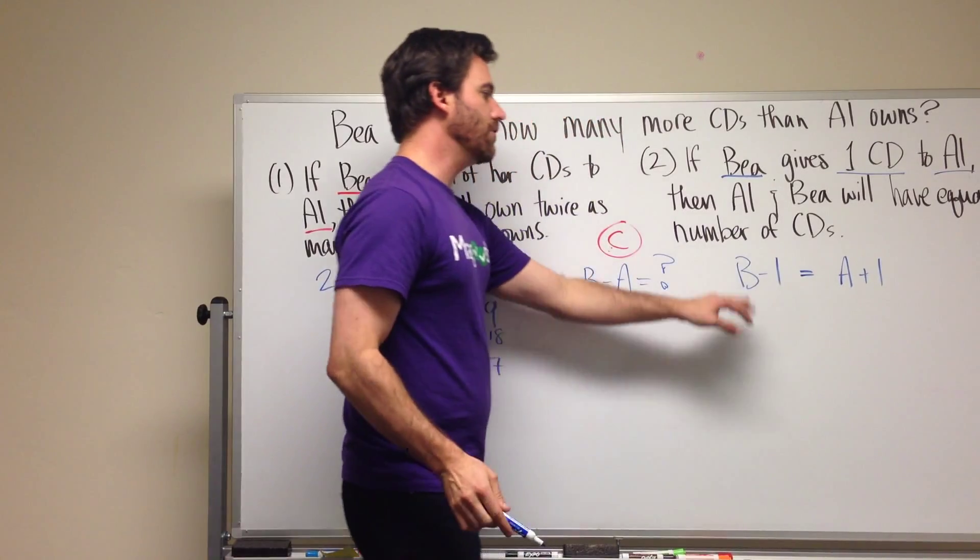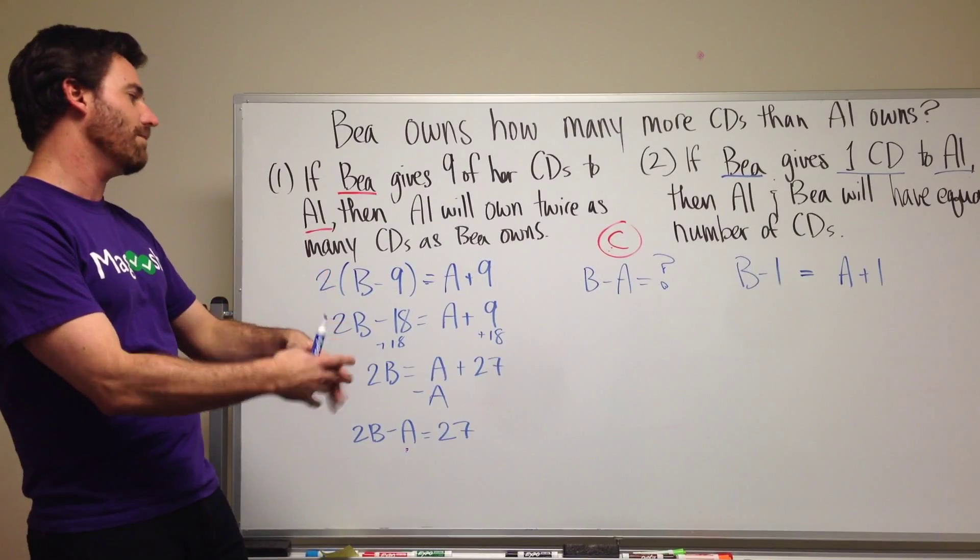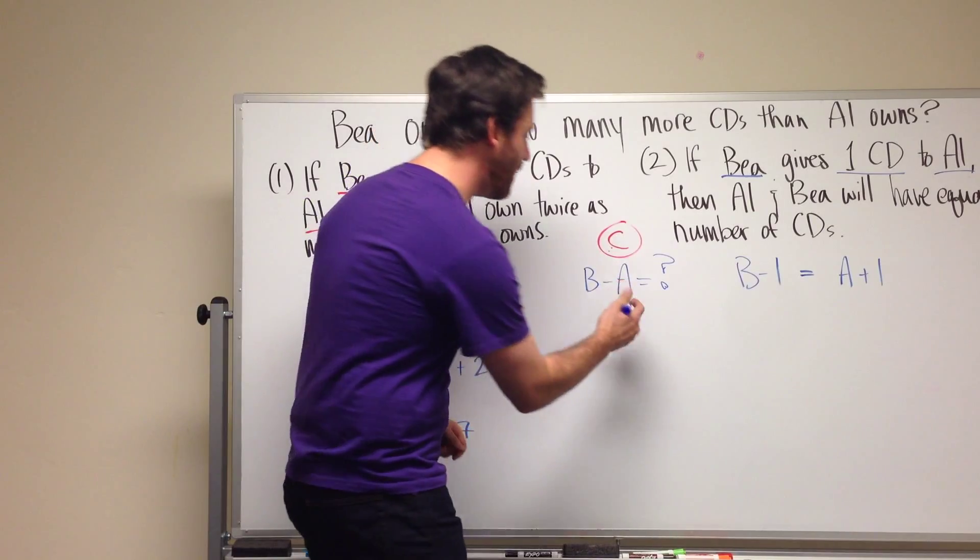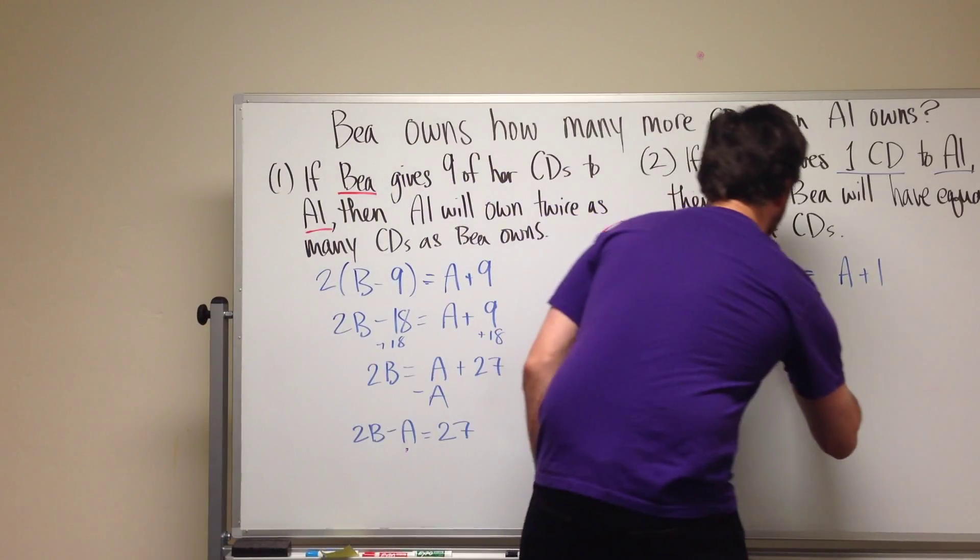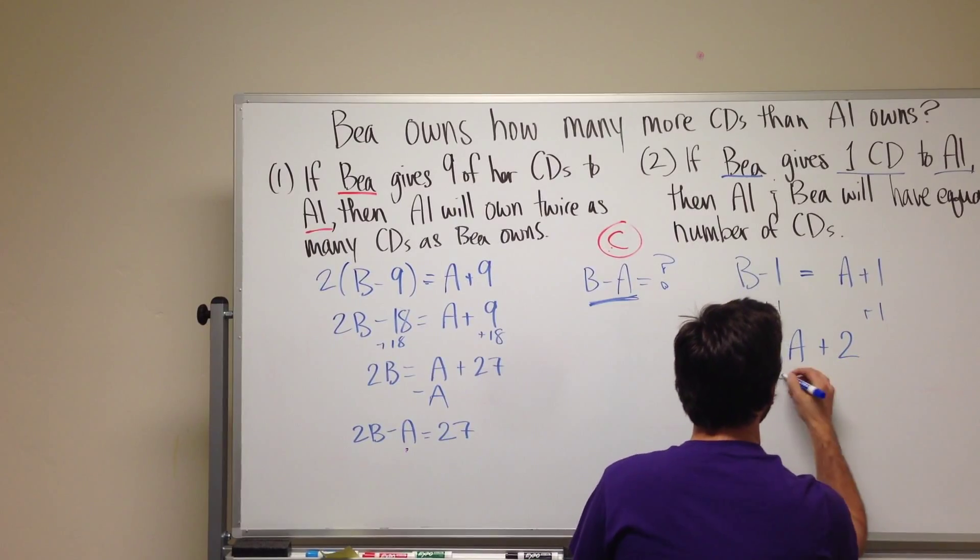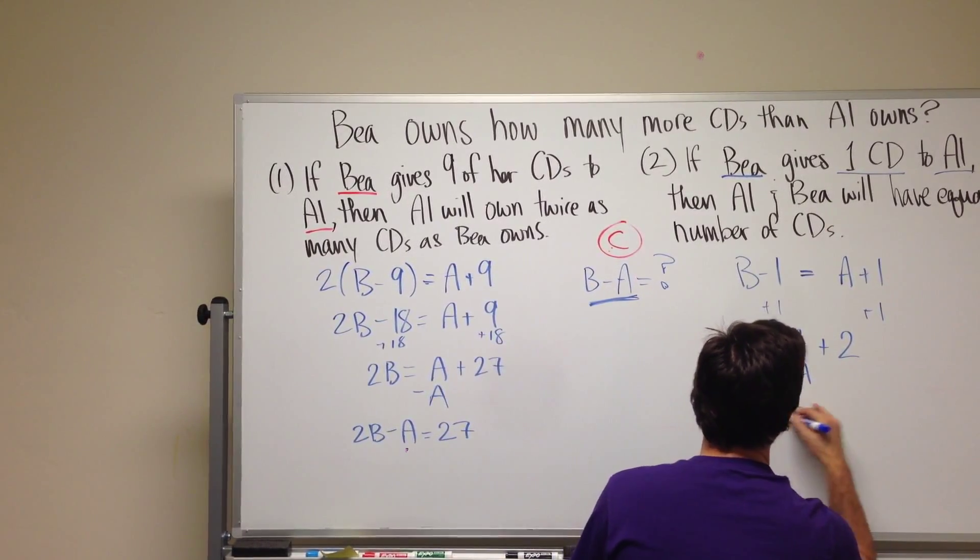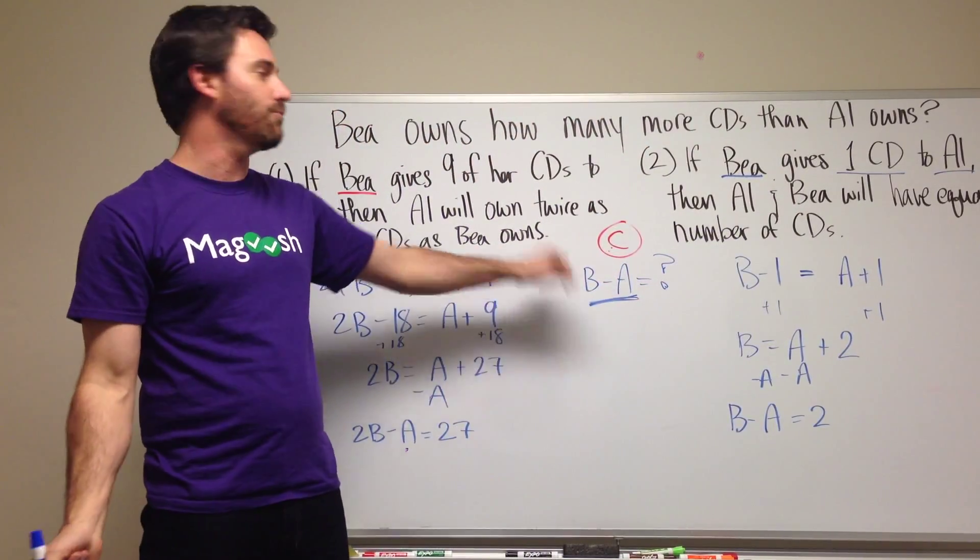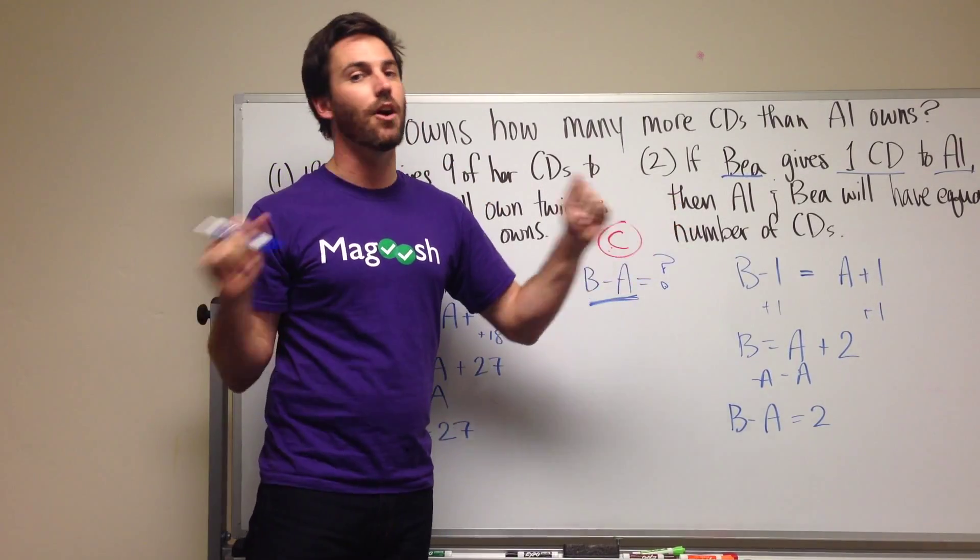So you might think this is similar to this, so I'm going to need both of these to solve the problem. But again, like I said, you actually can solve it with just this information because we can form that on one side of our equation. So if we go plus one, plus one, B equals A plus two, minus A, minus A, we get B minus A equals two. Now we know what the difference is. We know how many more CDs B has than Al. So statement two is all that we need.